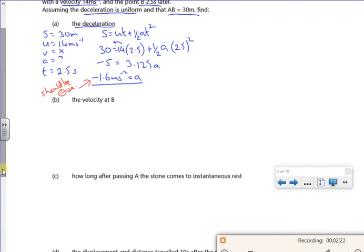So the velocity at B, well, you can choose which equation you want. I've got all the information that I need. So if we look, A is minus 1.6 and T is 2.5. So if you use the easiest equation, it's V equals U plus AT.